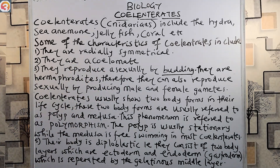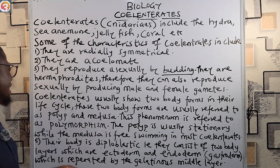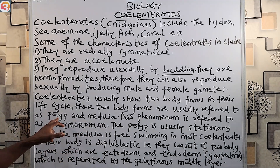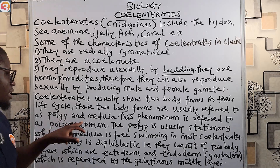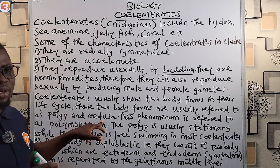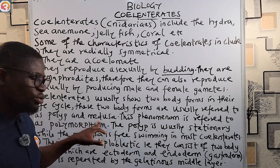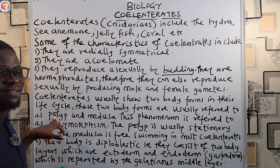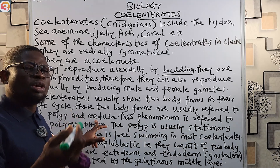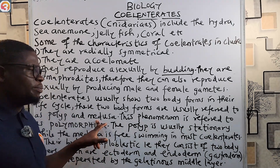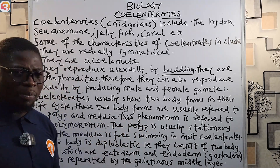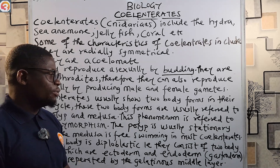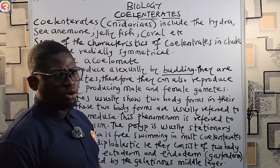Coelenterates usually show two body forms in their life cycle. These two body forms are referred to as the polyp and the medusa. The polyp (P-O-L-Y-P) is stationary — it is non-mobile and fixed — while the medusa (M-E-D-U-S-A) is free-swimming. This phenomenon is referred to as polymorphism, where an organism has two body forms or shapes.